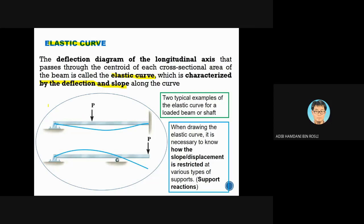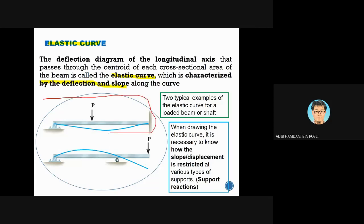Consider this first example: a beam that is pinned at one end and fixed at the other. Looking along the beam, you can see that at the fixed end there is no deflection and no slope, while at the pin there is no deflection but there is a slope.